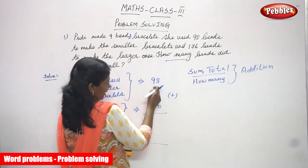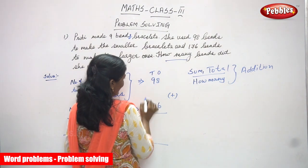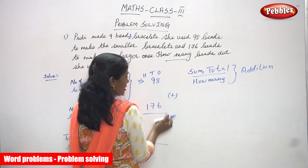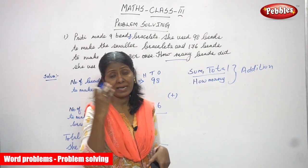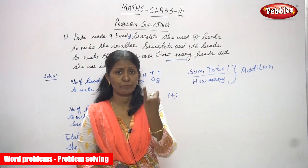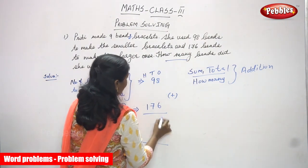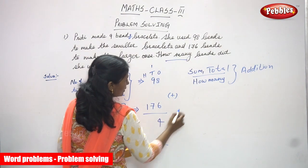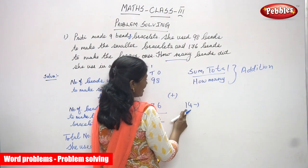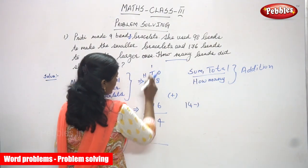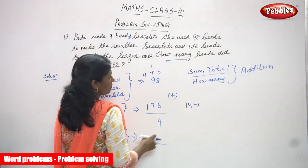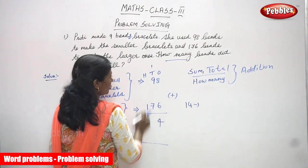So now I am going to add both numbers: 98 and 176. First I concentrate on the ones place value. The digits in the ones place are 8 and 6. Starting from 8, count up 6 fingers: 9, 10, 11, 12, 13, 14. So I write 4 in the ones place. 14 means 4 ones and 1 ten, so the 1 ten is carried over to the tens place.